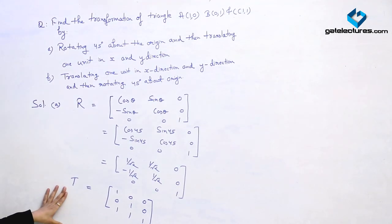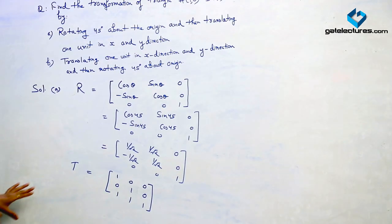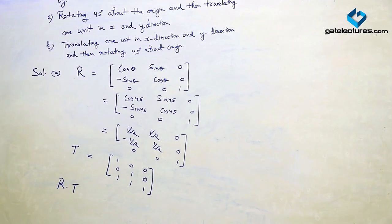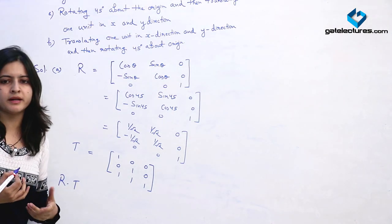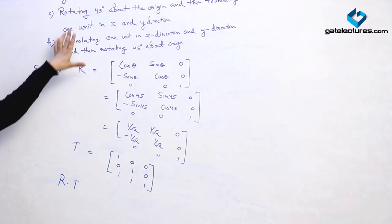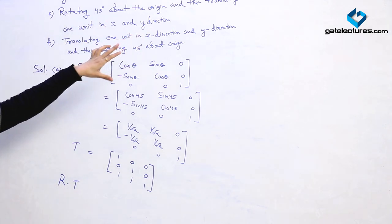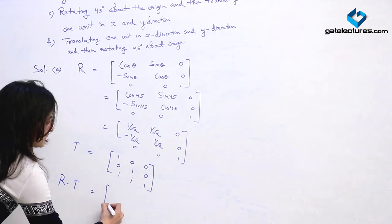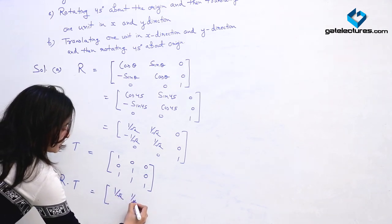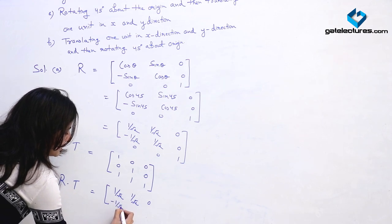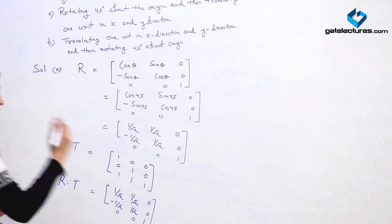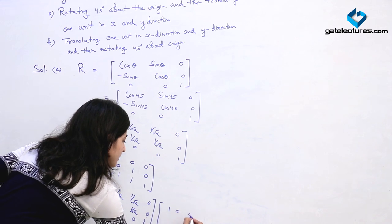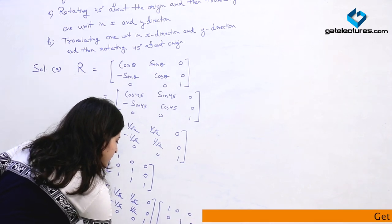We now have the two transformation matrices and need to make a composite by combining them. We have to find R·T. Note that matrix multiplication is not commutative — R·T ≠ T·R. Since we are applying rotation first and then translation, we write R·T. So R is [1/√2, 1/√2, 0], [−1/√2, 1/√2, 0], [0, 0, 1] and T is [1, 0, 0], [0, 1, 0], [1, 1, 1].